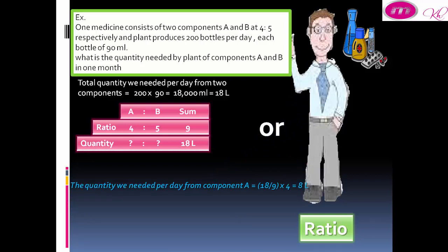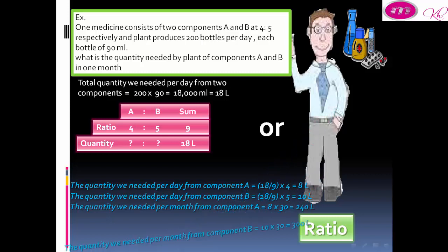Or, the quantity we need per day from component A equals 18 divided by 9 by 4 equals 8 liters. The quantity we need per day from component B equals 18 divided by 9 by 5 equals 10 liters. The quantity we need per month from component A equals 8 by 30 equals 240 liters. The quantity we need per month from component B equals 10 by 30 equals 300 liters.